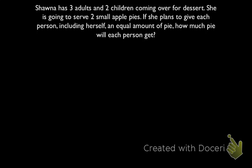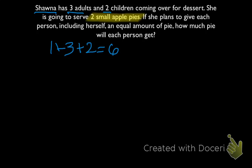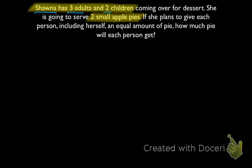First, we ask: what is being divided and how much do we have? We have people and we have pies. The pies are going to be what is divided, and we have two of them. Now, how many equal parts is it being divided into? We see there are three adults and two children, plus Shauna — so 1 plus 3 plus 2 gives us six people. Two is our dividend and also our numerator, divided by six for six people — so we write 2 over 6. Two is the numerator and six is the denominator.